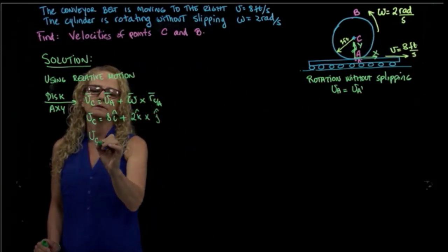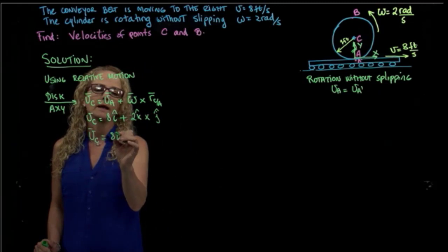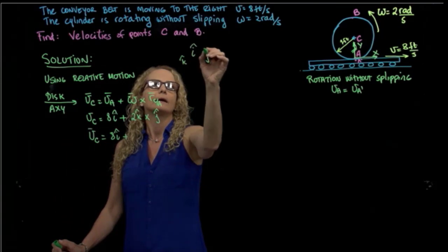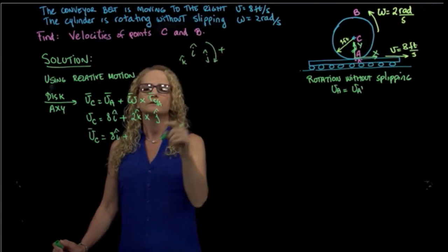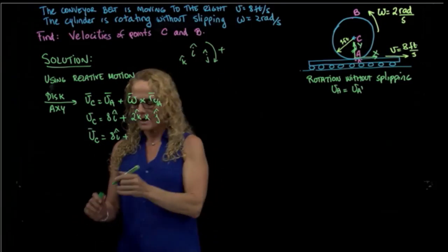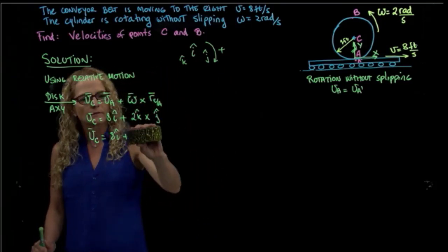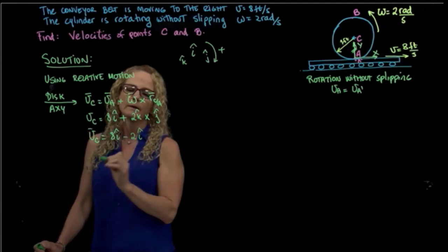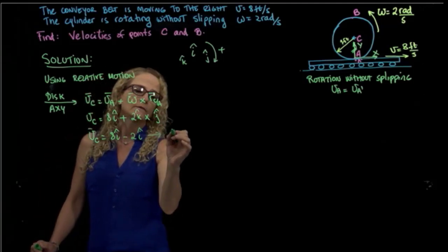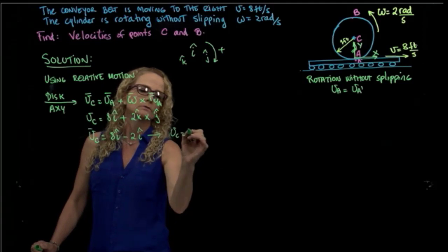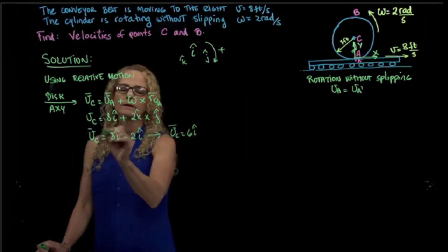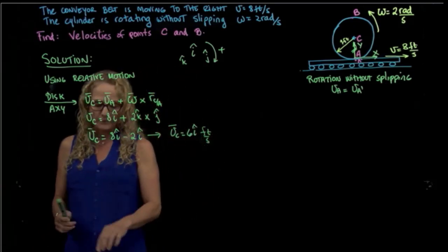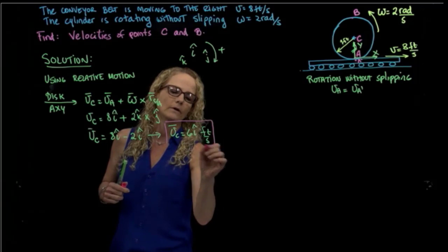Computing the cross product: k times j gives negative i, so we have minus 2i. Therefore, the velocity of C equals 8i minus 2i, which is 6i feet per second. That is the first velocity we were asked to find.